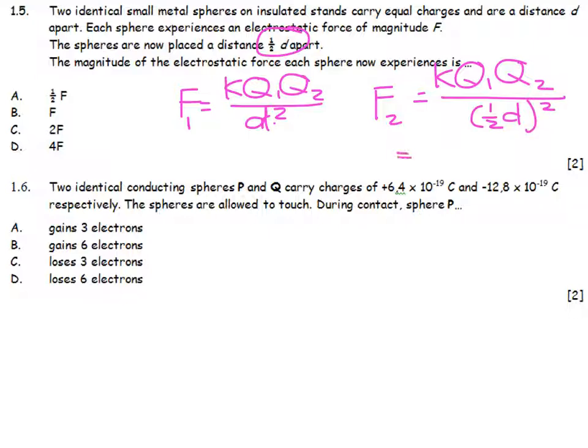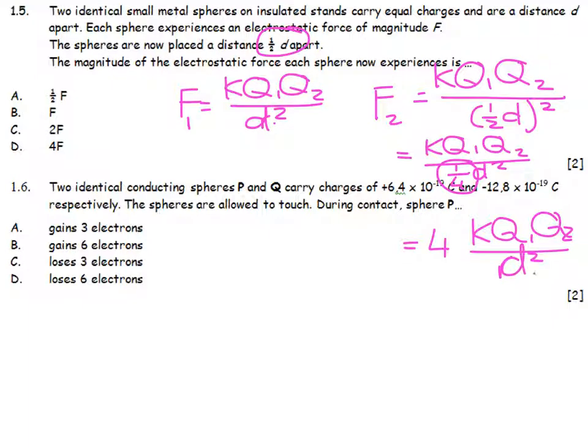That becomes KQ1Q2 over a quarter D squared. When I have a quarter in the denominator, it really means 4 in the numerator. And therefore, what's going to happen is I can now say, but that was my original force. So my new force is 4 times the original force, D.